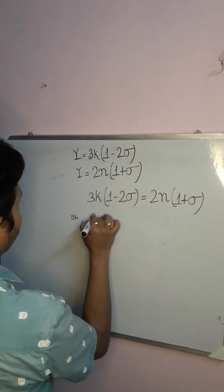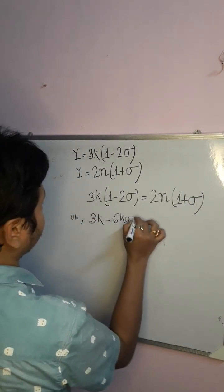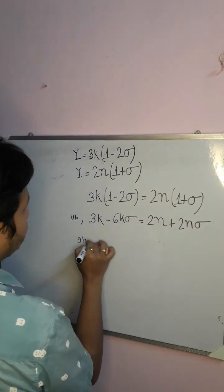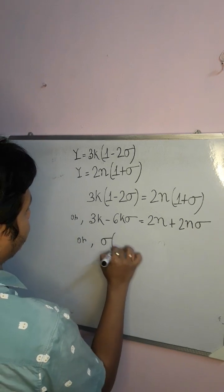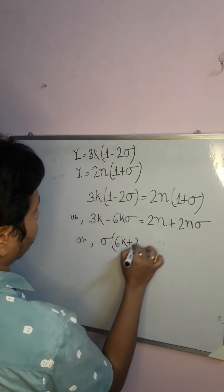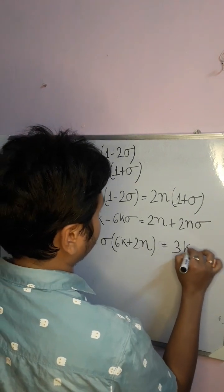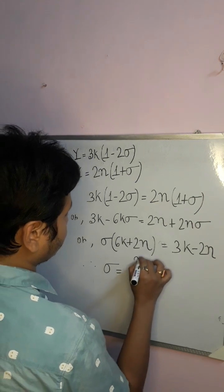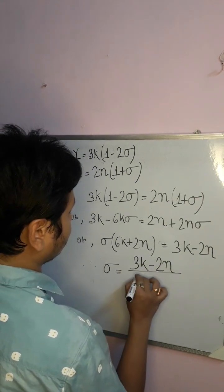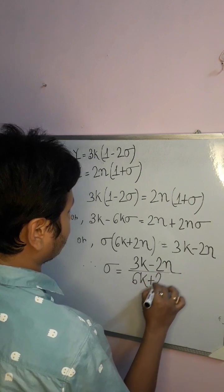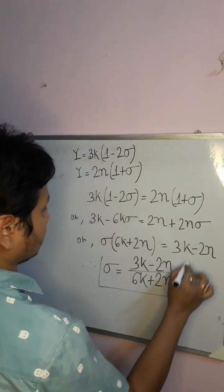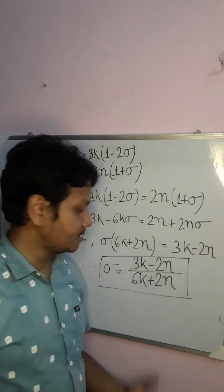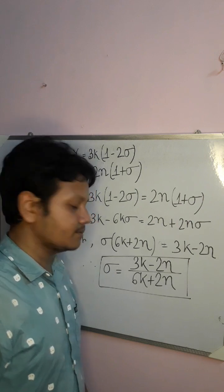Taking sigma as common: sigma times (6K + 2η) = 3K − 2η. Therefore sigma equals (3K − 2η) divided by (6K + 2η). This is another important relation between the elastic constants.